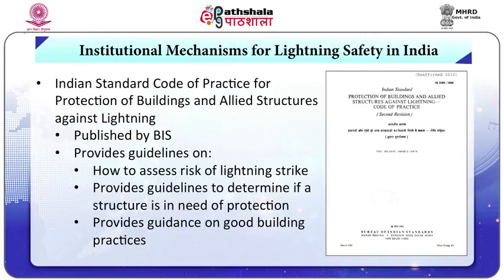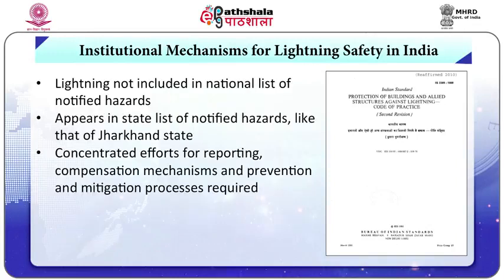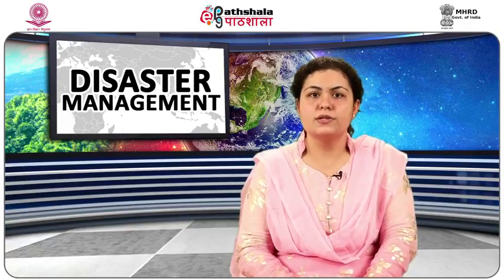Let us now learn about the institutional mechanisms to address lightning and thunderstorms in India. The Indian Standard Code of Practice for Protection of Buildings and Allied Structures Against Lightning outlines the technical aspects of lightning, assesses risks of lightning strike, and provides guidelines to determine if a structure needs protection. Currently, lightning is still not recognized as a major disaster and is not present in the National List of Notified Hazards, despite the alarming number of lightning deaths. It falls in the State Notified Hazard List of only select states like Jharkhand. As such, reporting of lightning events and compensation mechanisms is not streamlined, and concentrated efforts to prevent and mitigate the risks are also in a nascent stage.